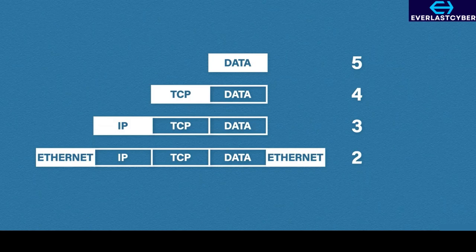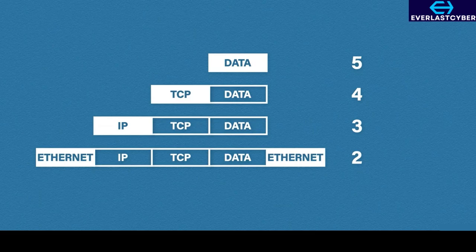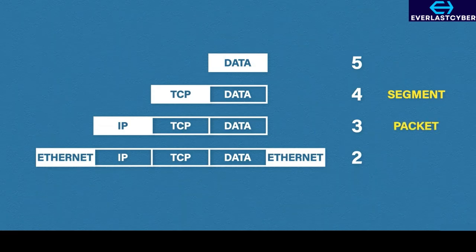It's important to note that at each stage, the data has a specific name. At layer 5, the data is called data. Once the transport information has been added, it's now called a segment. Adding the network layer information makes our segment a packet, and finally, once we add our data link information, the packet becomes a frame.